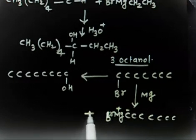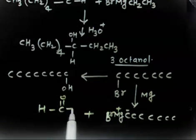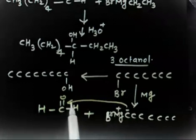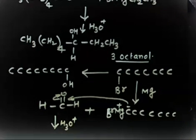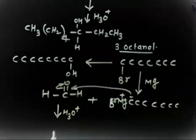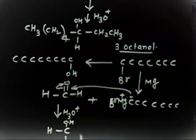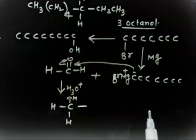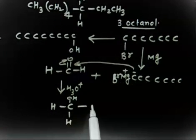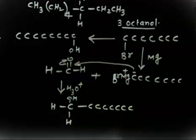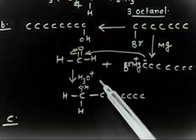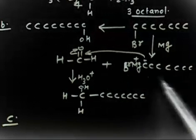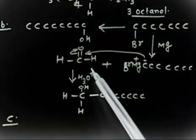You need to increase the chain by one carbon, so treat the Grignard reagent with formaldehyde (HCHO). The carbanion attacks formaldehyde; after hydrolysis you get CH₃(CH₂)₅CH₂CH₂OH — that is 1-octanol with 8 carbons. If you want to increase by one carbon, formaldehyde is the best option.